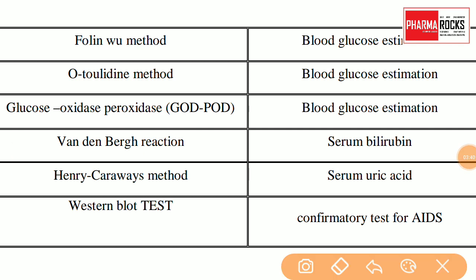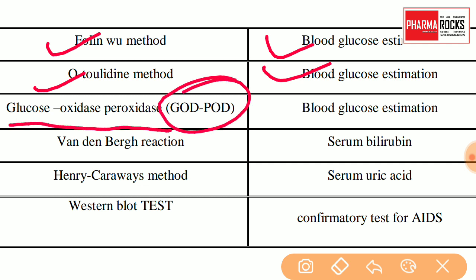Next, the Folin-Wu method is for blood glucose estimation. Then, O-toluidin method is also for blood glucose estimation. And glucose oxidase peroxidase — GOD-POD — इसको कहते हैं, बहुत ही important है. GOD-POD is carried out for blood glucose estimation. आपके copy में भी highlight करके लिख दो: GOD-POD for blood glucose estimation.